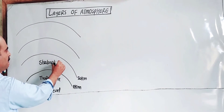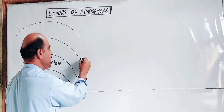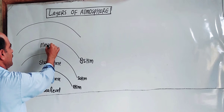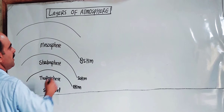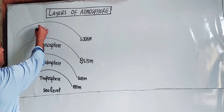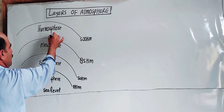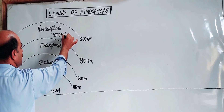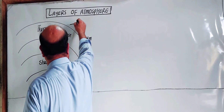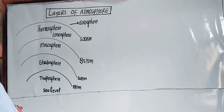Within the Stratosphere we have the ozone layer. From 50 to 85 kilometers is the Mesosphere. From 85 to 500 kilometers is the Thermosphere. Within this region we also have the Ionosphere, which is the ionic form of that region. And the outermost layer is the Exosphere.